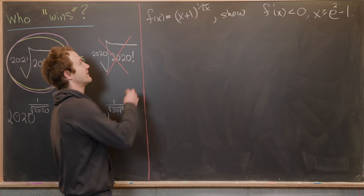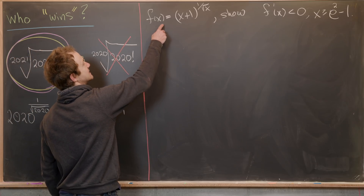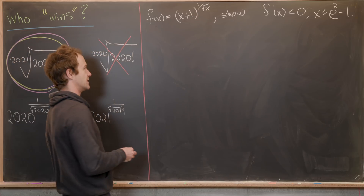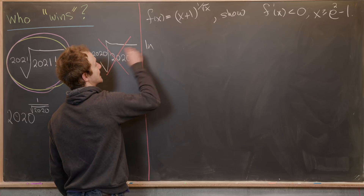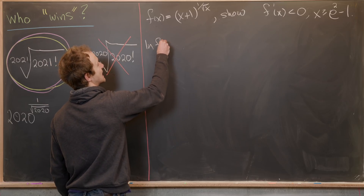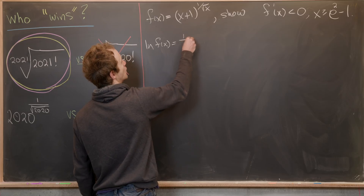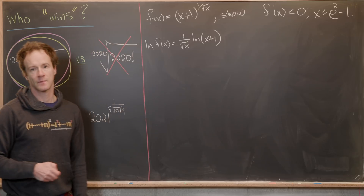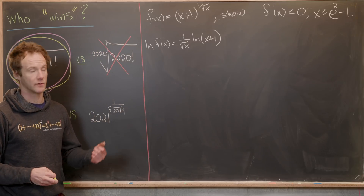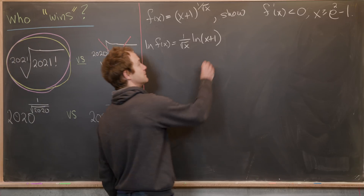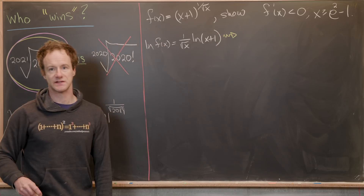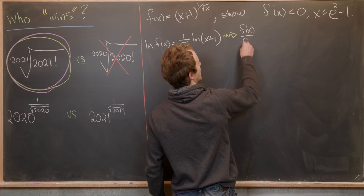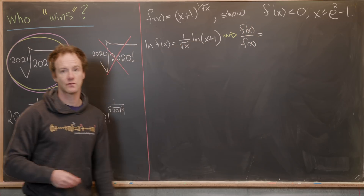To take the derivative, since we have variables in both the base and the exponent, we use logarithmic differentiation. Taking the log of both sides gives us the natural log of f of x equals one over the square root of x times the natural log of x plus one — using the standard log rule to bring the exponent down. Differentiating both sides gives f prime of x over f of x on the left by the chain rule.